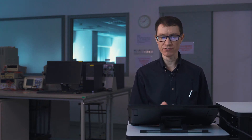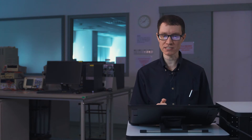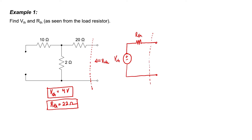The Thevenin equivalent resistance is then 22 ohms. Our circuit network consisting of a 2 ampere source and three resistors of 10 ohms, 20 ohms, and 2 ohms can all be replaced by a single Thevenin equivalent voltage source of 4 volts and a Thevenin equivalent resistance of 22 ohms, and the load resistor wouldn't be able to tell the two apart.